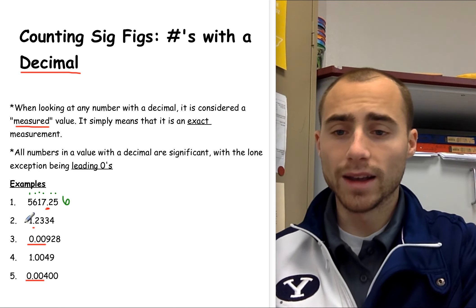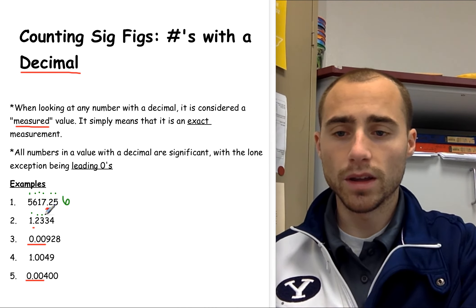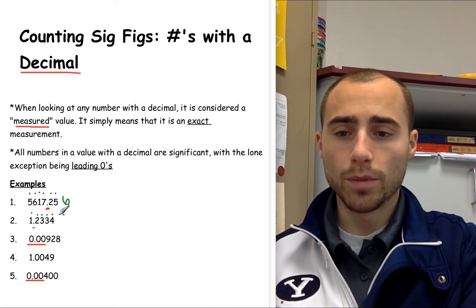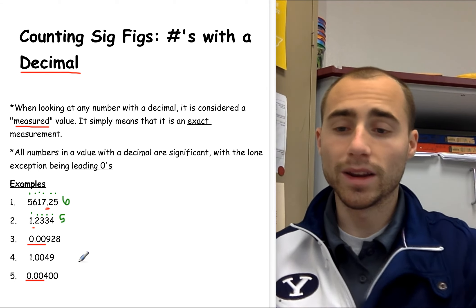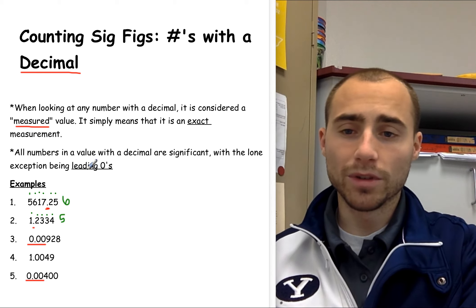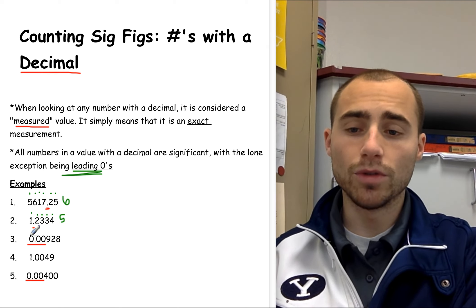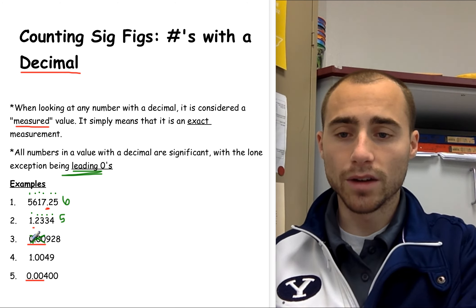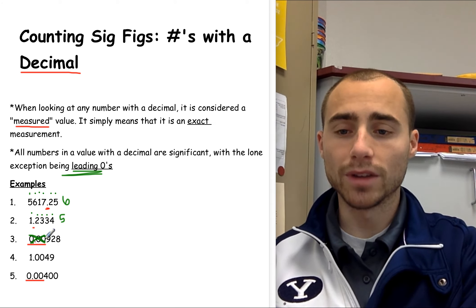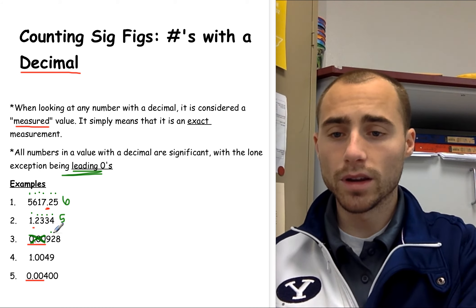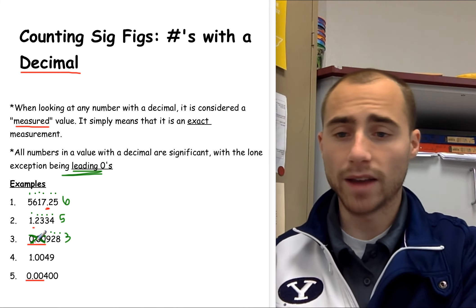Pretty straightforward. The second number still has no zeros and it also has a decimal, so we count every single number: one, two, three, four, five. So 1.2334 would have five significant figures. This next one is where we get to some leading zeros. All numbers in a decimal are significant except leading zeros, so any zeros at the beginning of a number you do not count. So 0.00928 will have three significant figures because we do not count the leading zeros.